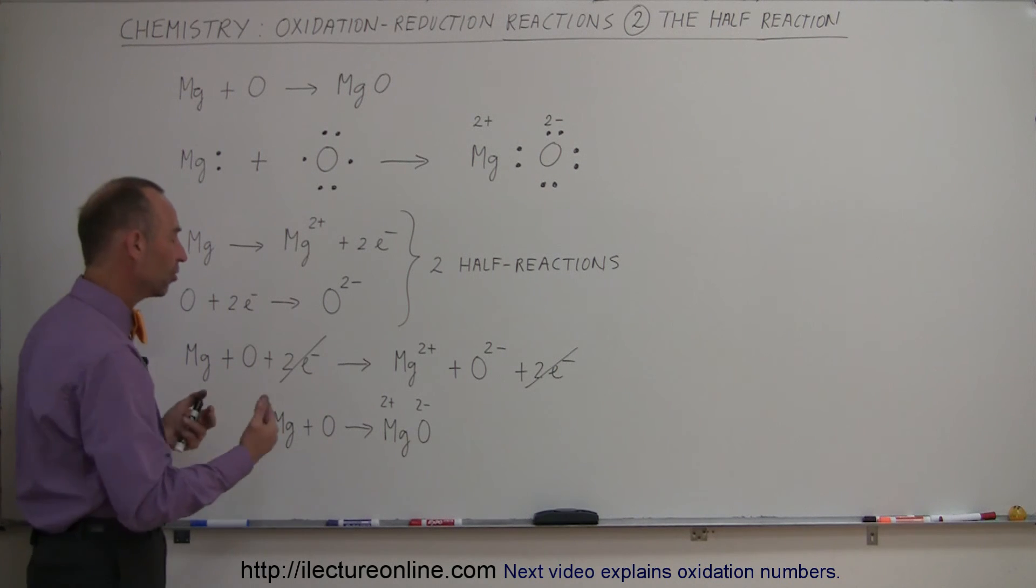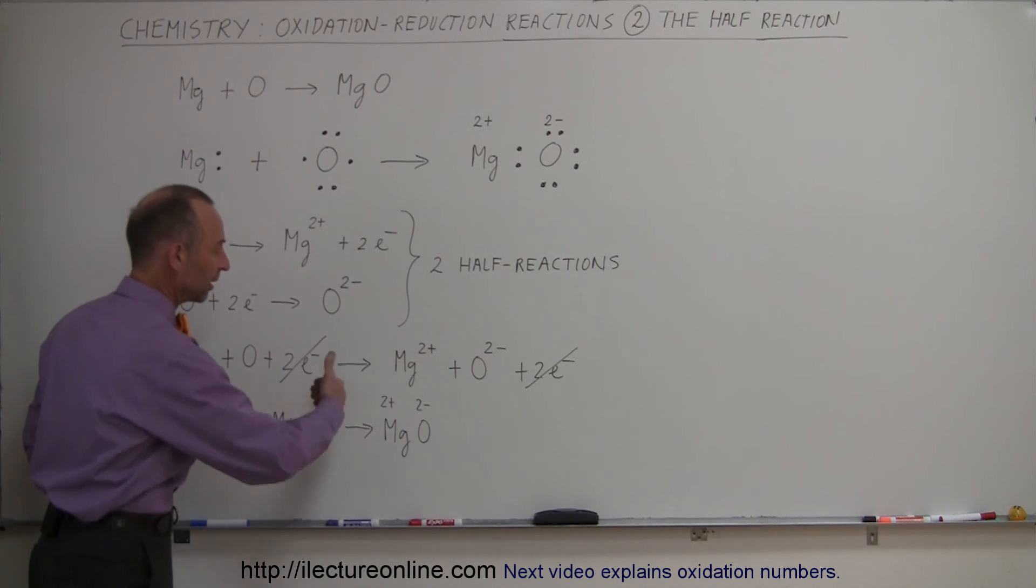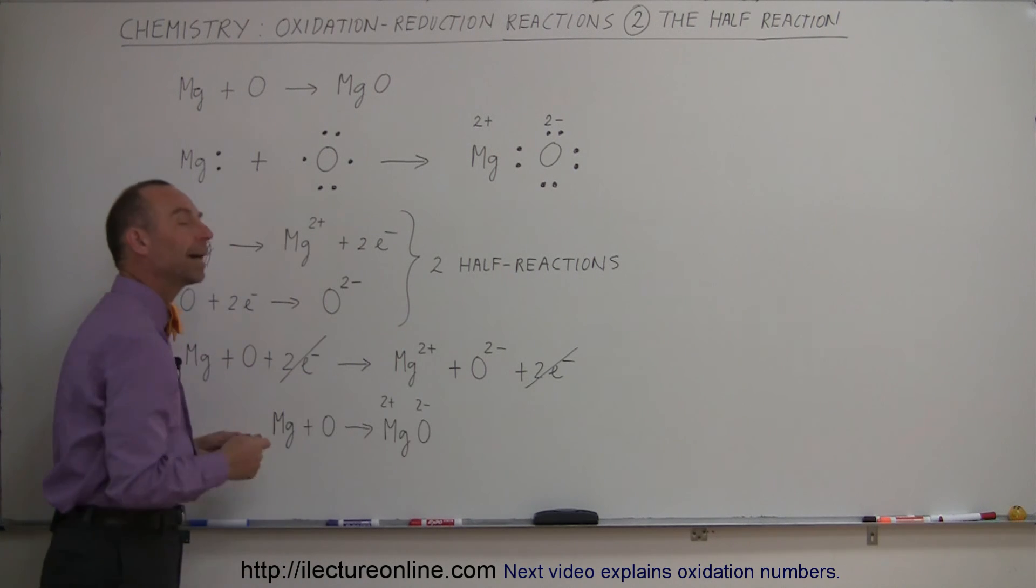and so it's not a 100% all or nothing situation, but in an oxidation reduction reaction, we indicate that as if it was a 100% situation where the two electrons are permanently given to the oxygen and the two electrons are permanently removed from magnesium.